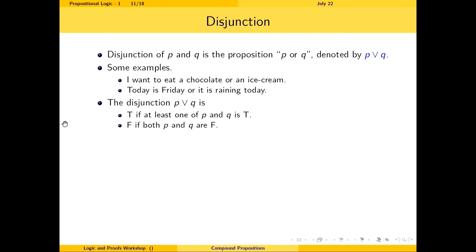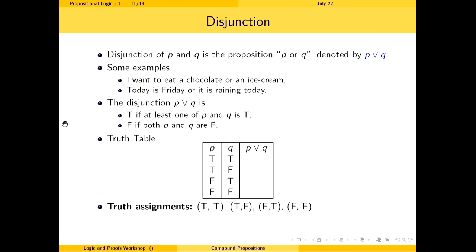The disjunction of P and Q is the proposition 'P or Q,' denoted P ∨ Q. Examples: 'I want to eat a chocolate or an ice cream,' 'Today is Friday or it is raining today.' The disjunction is true if at least one of P, Q is true, and false only if both are false. Truth table: true∨true = true, true∨false = true, false∨true = true, false∨false = false. For 'Today is Friday or it is raining today' — since today is Friday (true), the result is true.